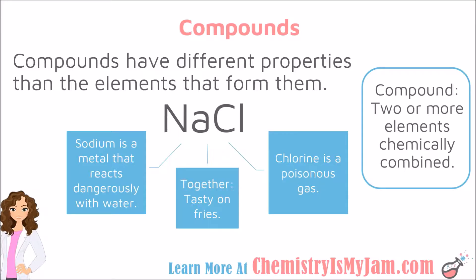A great example is sodium chloride, which is table salt. Sodium by itself is a metal that reacts dangerously with water. Chlorine by itself is a poisonous gas. But when they come together to form table salt, you have something that you can eat and that is tasty on fries. So they have totally different properties when chemically combined than when they are separate.